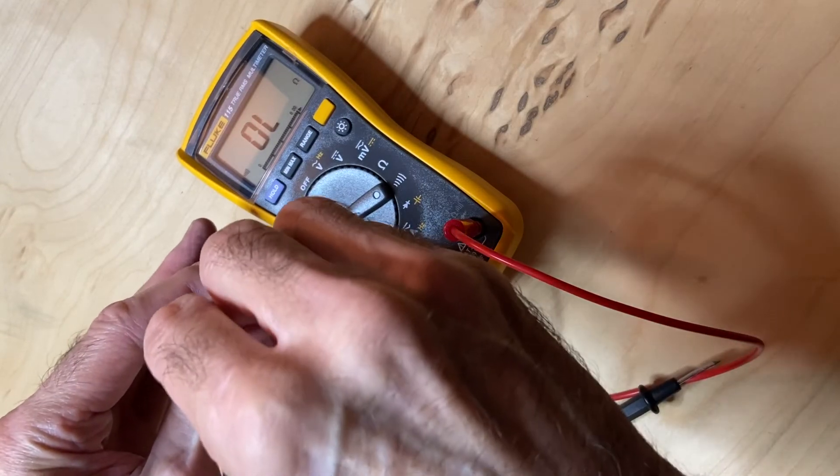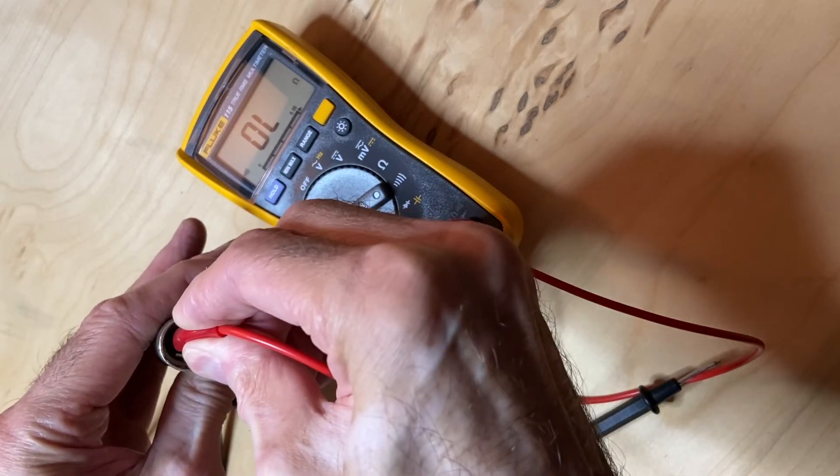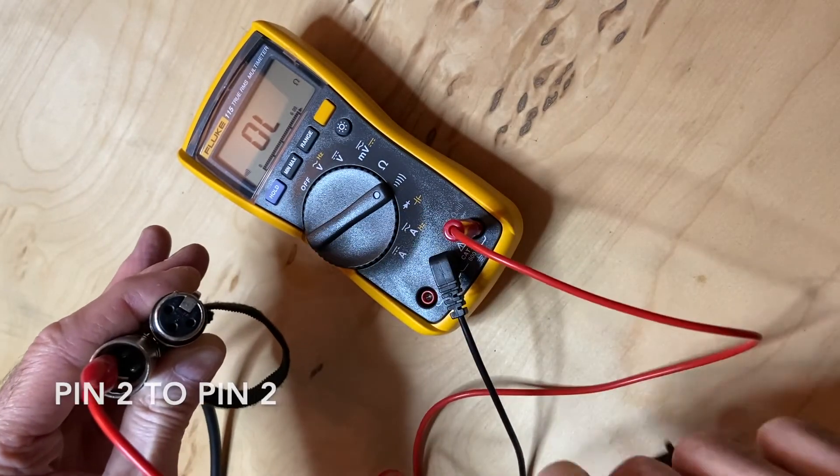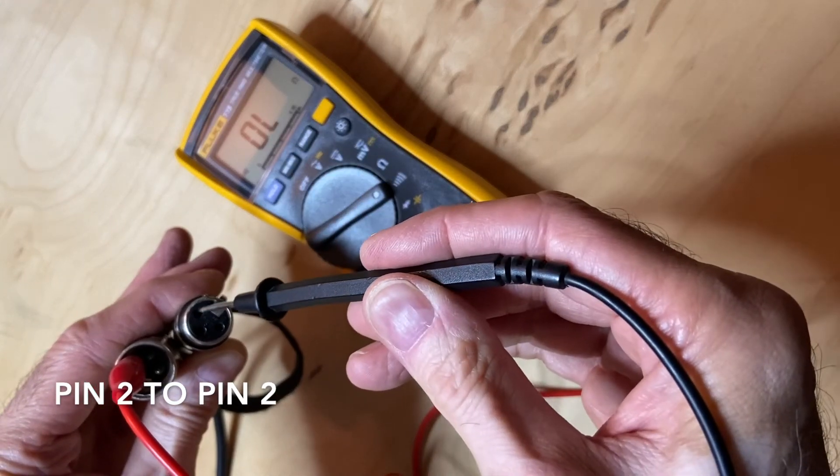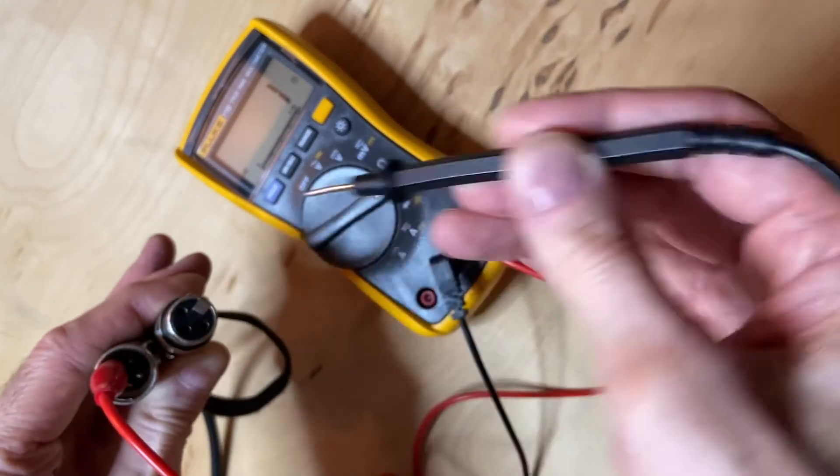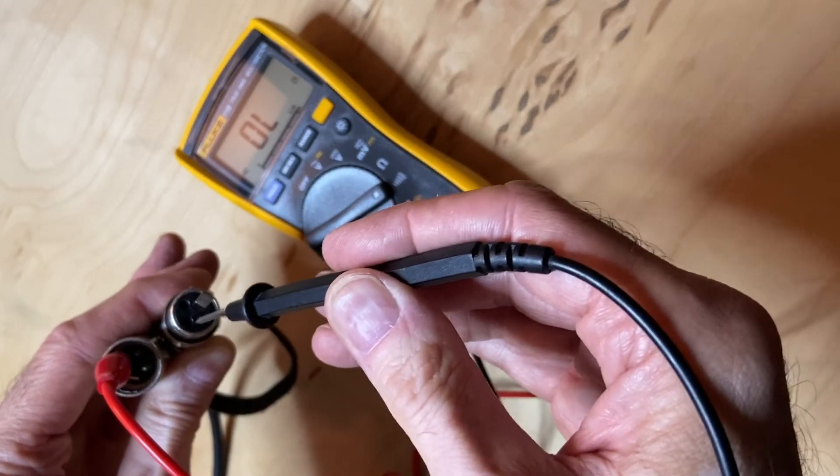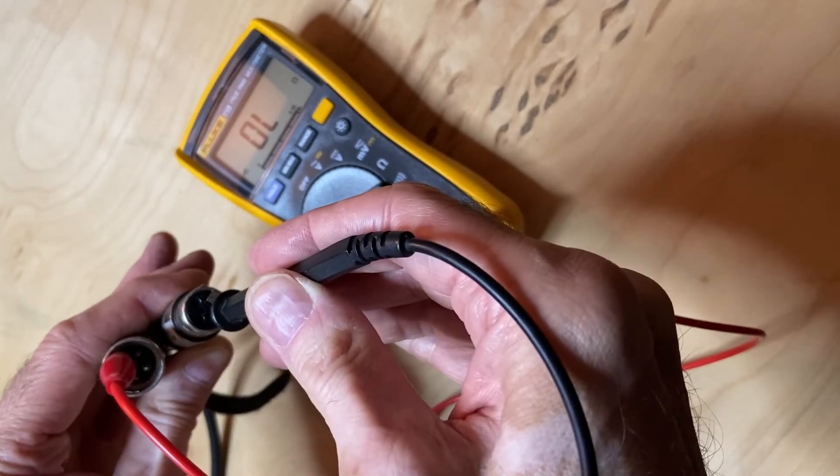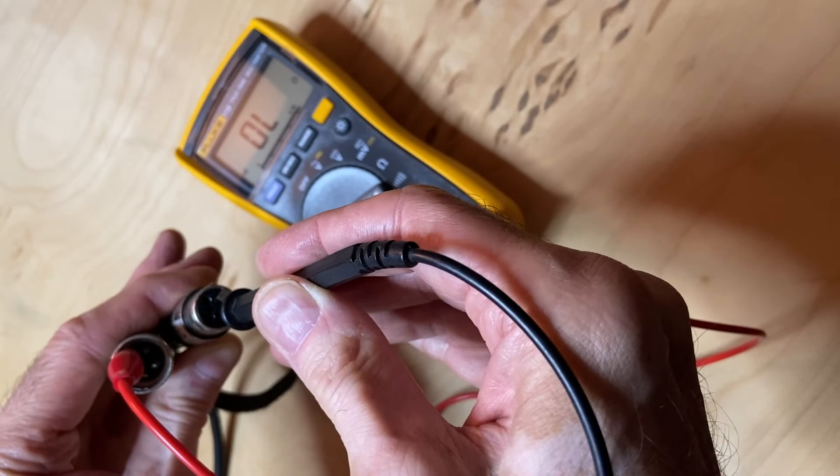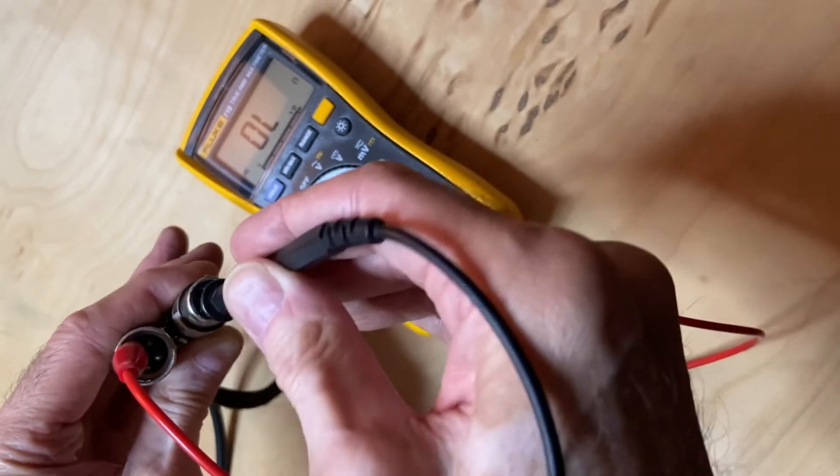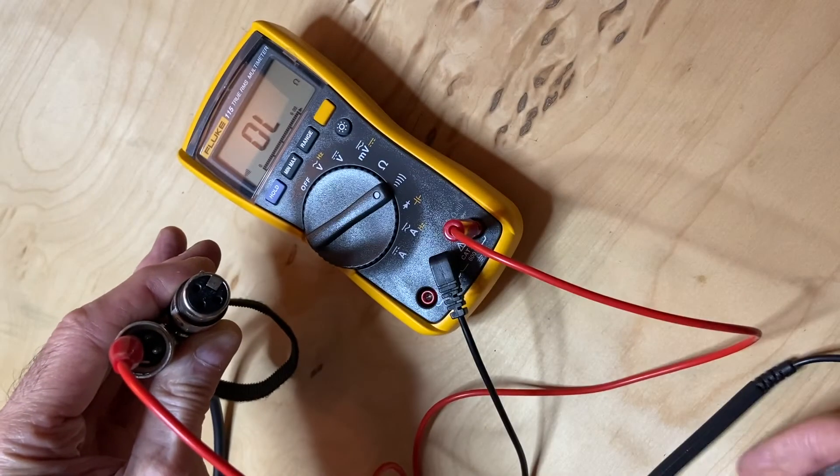I'll take the alligator clip and move it over to pin number 2 on the XLR male. Then I'll take the probe and connect it to pin 2 on the female. We have continuity there. 2 to 1, no continuity, which is good. 2 to 3, no continuity, no shorts, also good.